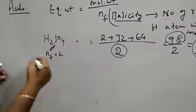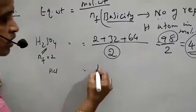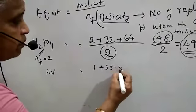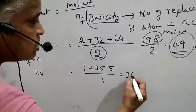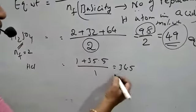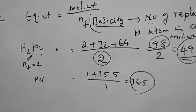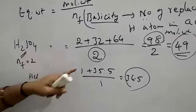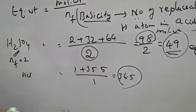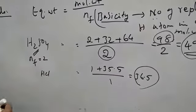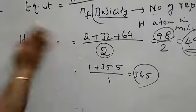One more example: hydrochloric acid. Hydrogen 1, chlorine 35.5, so molecular weight equals 36.5. Divided by replaceable hydrogen which is 1. So in the case of hydrochloric acid, molecular weight equals 36.5 and equivalent weight also equals 36.5, because the N-factor — replaceable hydrogen — is 1.